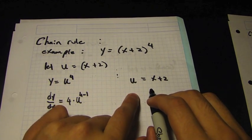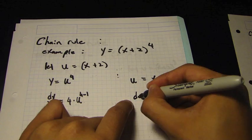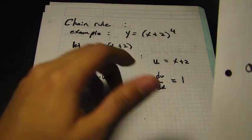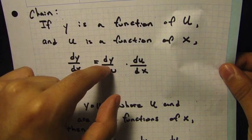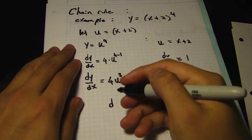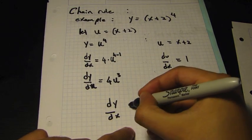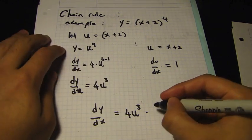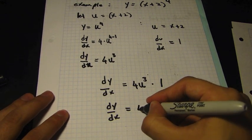Next, we differentiate u to get du/dx. This one is very simple — du/dx equals 1. Now that we have our dy/du and du/dx, we can use the chain rule formula: dy/dx equals dy/du times du/dx. So dy/dx equals 4u³ times 1.